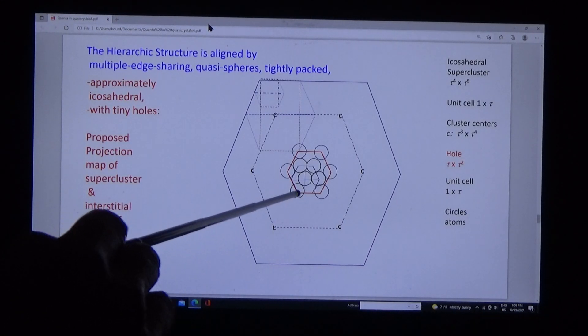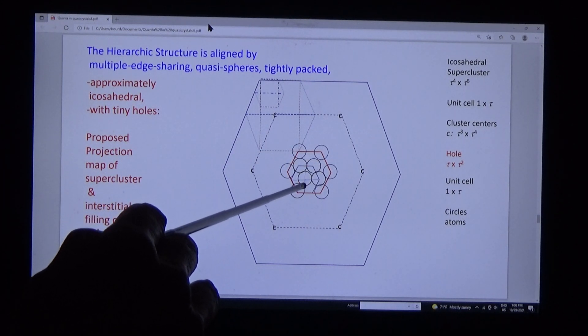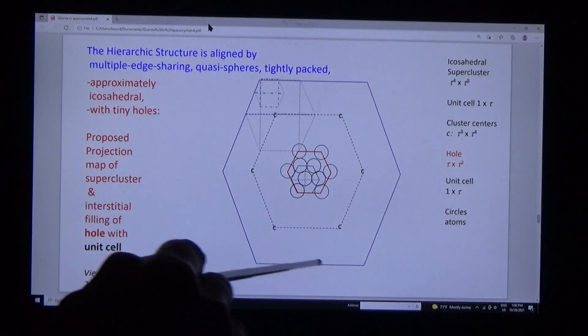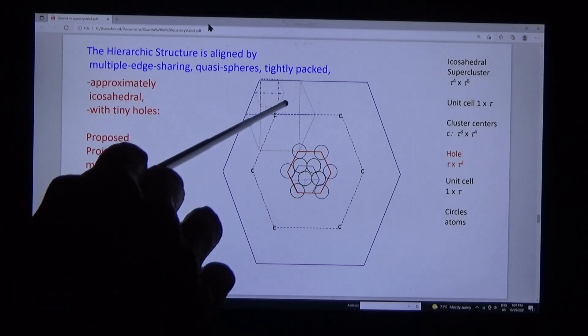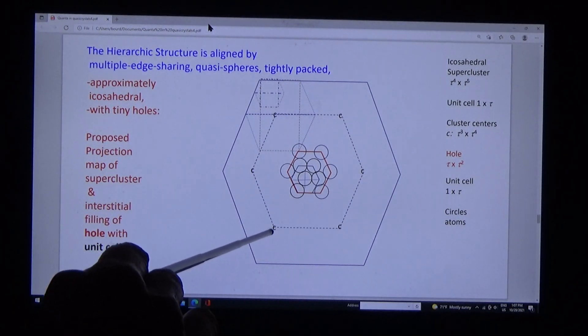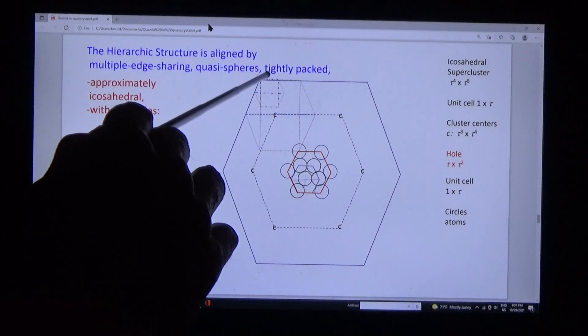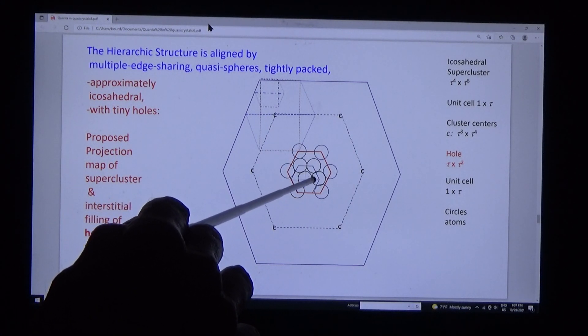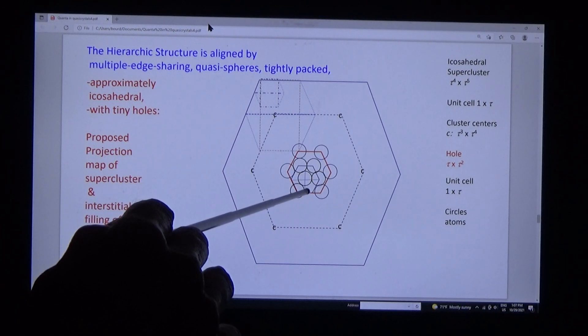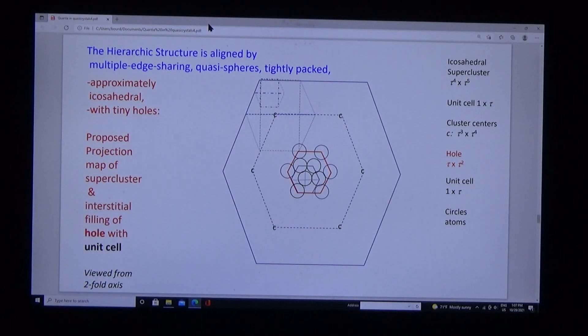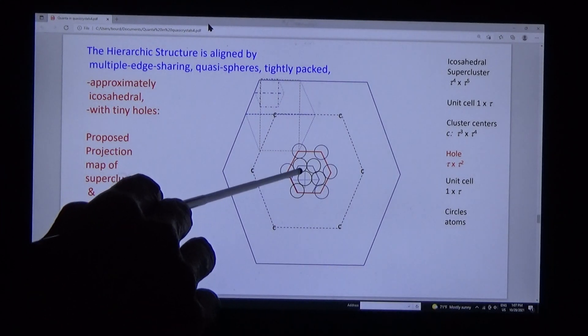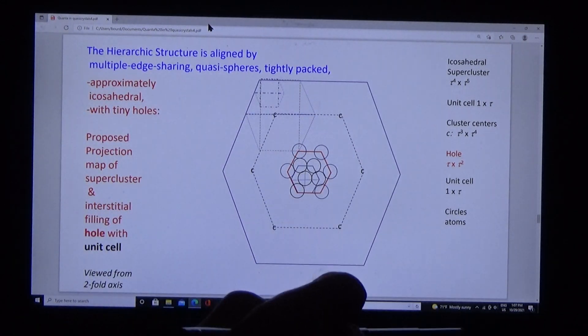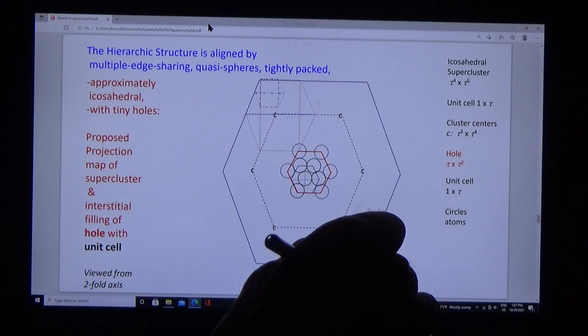These spheres have holes. They're porous. Here's a hole in a supercluster—the supercluster we mapped before. At this orientation it contains six clusters. Here's a cluster and multiple unit cells. The hole can be filled quite easily by interstitial atoms represented by this unit cell. The volume of the hole is 3% of the volume of the structure proper, the icosahedral structure.